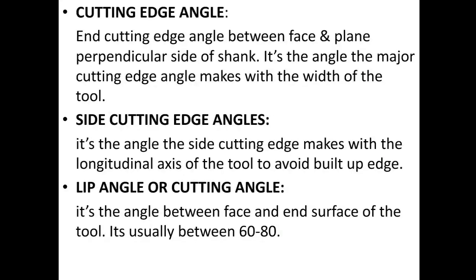Cutting edge angles: end cutting edge angle is the angle between the face and the plane perpendicular to the side of the shank. Side cutting edge angle is the angle the major cutting edge makes with the width of the tool. The side cutting edge angle is the angle the side cutting edge makes with the longitudinal axis of the tool, used to avoid built-up edge. Lip angle or cutting angle is the angle between the face and end surface of the tool; it is usually between 60 to 80 degrees.